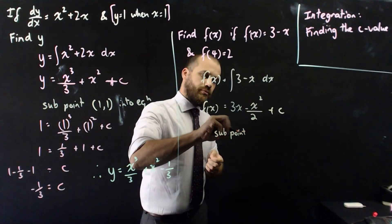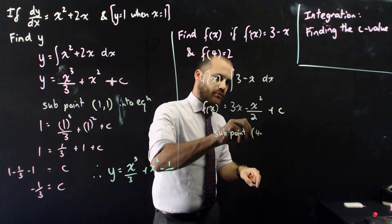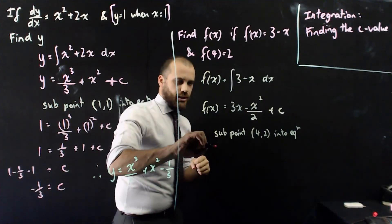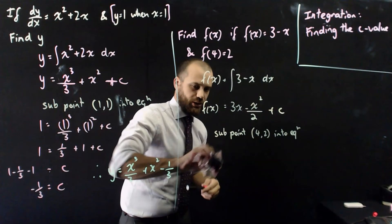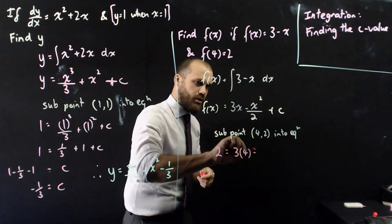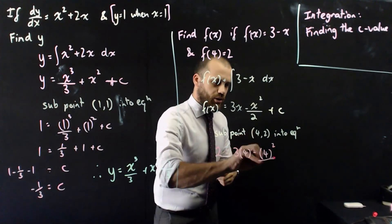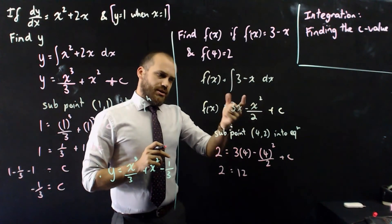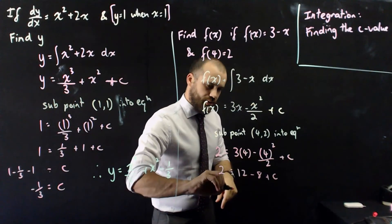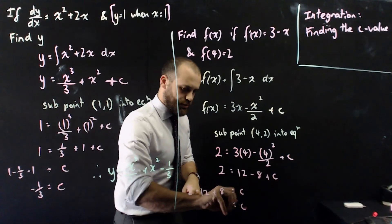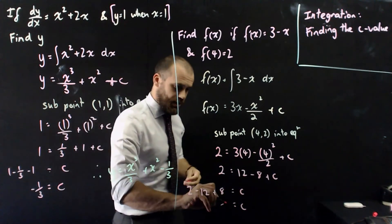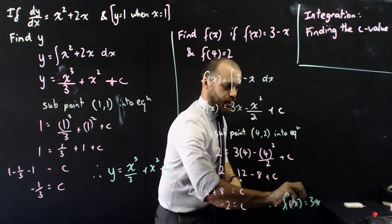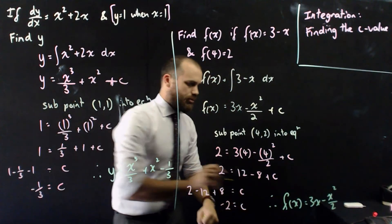Now I just need to substitute the point (4, 2) into our equation. So 2 equals 3 times 4 minus 4 squared over 2 plus c. That gives 2 equals 12 minus 8 plus c — since 4 squared is 16, divided by 2 is 8. So c equals 2 minus 12 plus 8, which is negative 2. Therefore f(x) equals 3x minus x squared over 2 minus 2.